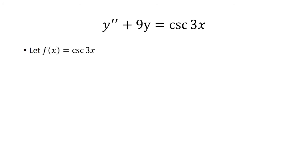And now we're going to let f(x) be cosecant 3x, which is what we have on the right side of the differential equation. We want v₁(x) to be negative integral f(x) times y_b over the Wronskian dx. And then v₂(x) is equal to the integral of f(x) times y_a over the Wronskian times dx.